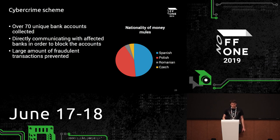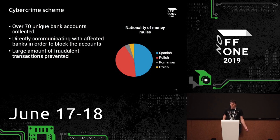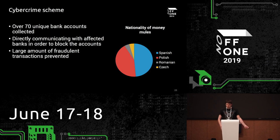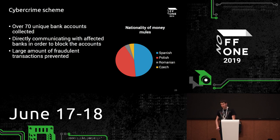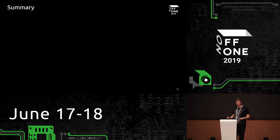Throughout our work, we collected over 70 unique mule bank accounts. As the graph shows, most were from Spain and Poland, which directly correlates with the length of the campaigns in those countries — the Spanish campaign was the longest, followed by Poland. Since the Czech campaign was quite short — about three weeks — there were just a few mule accounts there. There were also a few Romanian ones; we think they may have run out of Spanish accounts and decided to use Romanian ones instead.